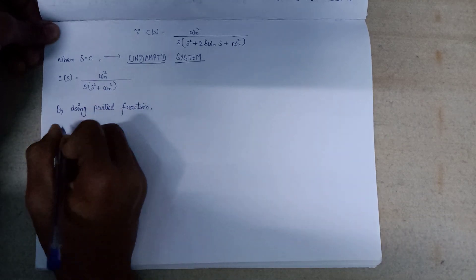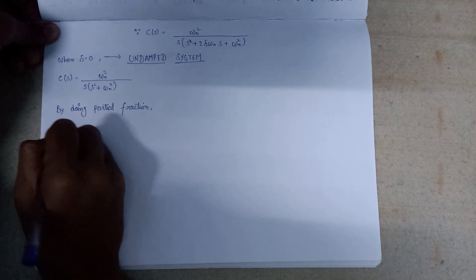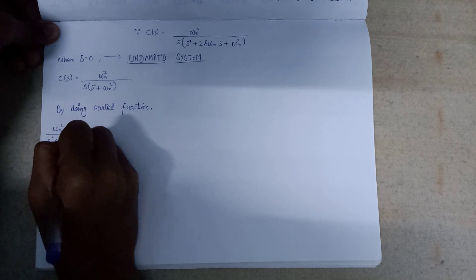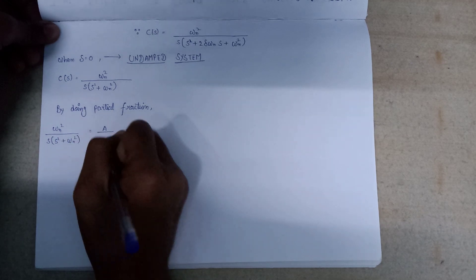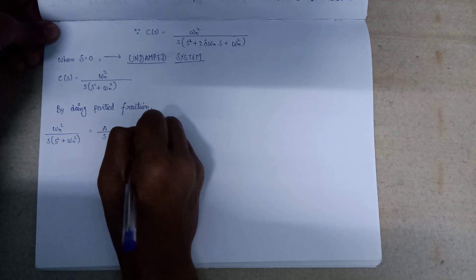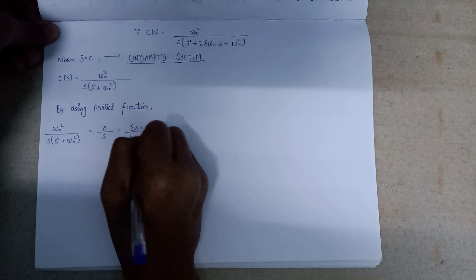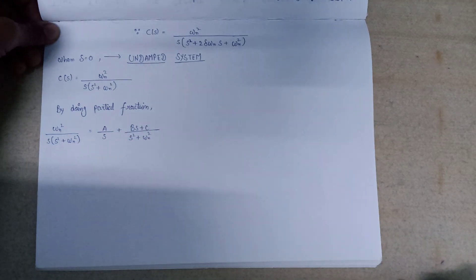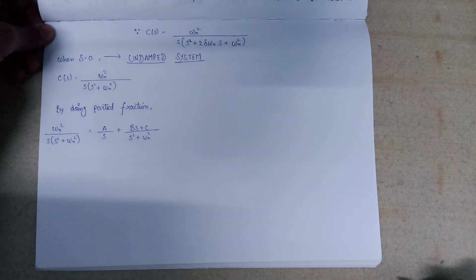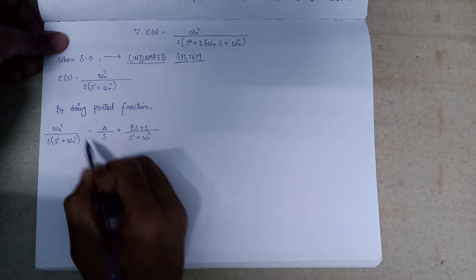We get omega_n squared over s times (s squared plus omega_n squared) is equal to A over s, plus (B*s + C) over (s squared plus omega_n squared). So we are going to find out the values of A, B, and C to solve this expression.